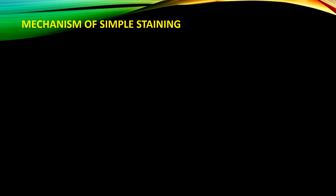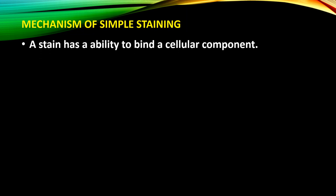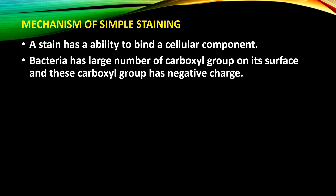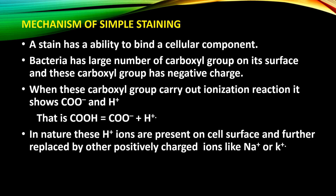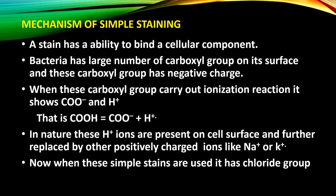Now let's see the mechanism of simple staining. A stain has the ability to bind a cellular component. Bacteria have a large number of carboxyl groups on their surface, and these carboxyl groups carry a negative charge. When these carboxyl groups undergo ionization, COOH ionizes to COO⁻ plus H⁺ ions. These H⁺ ions are present on the cell surface and are replaced by other positively charged ions like sodium (Na⁺) or potassium (K⁺) ions.